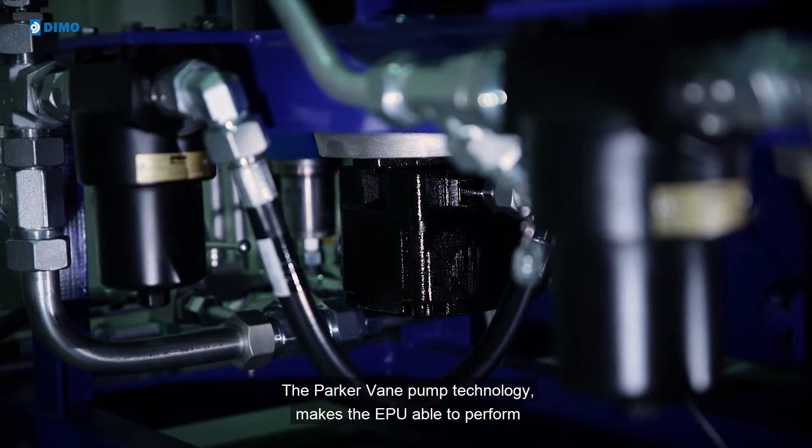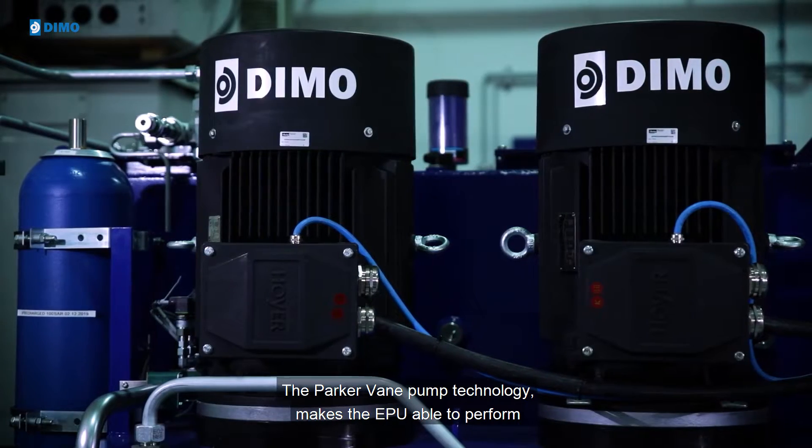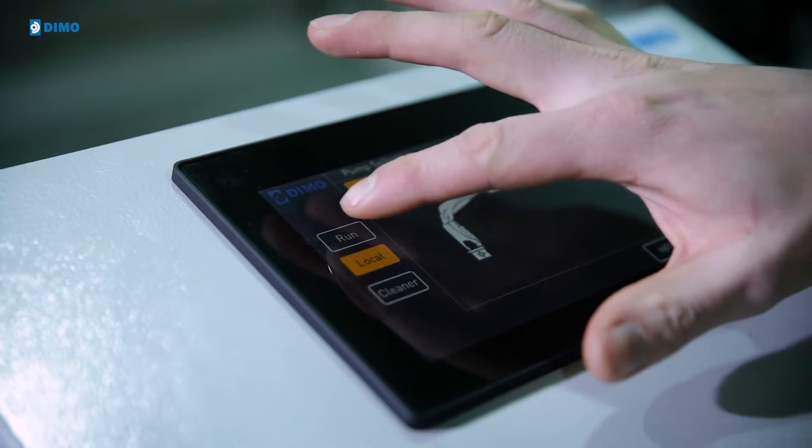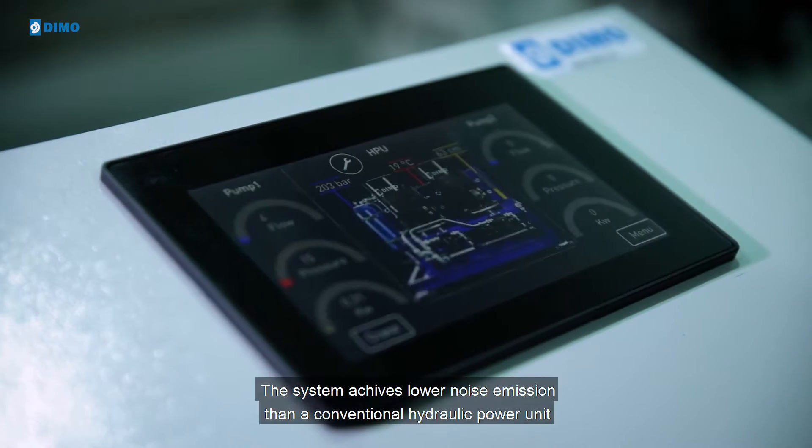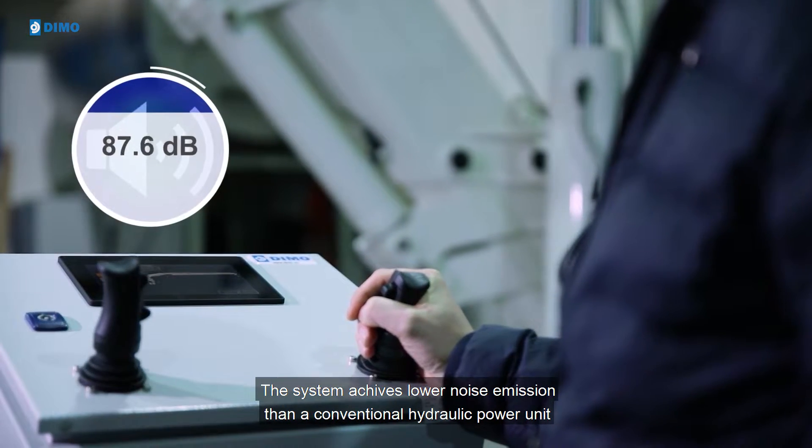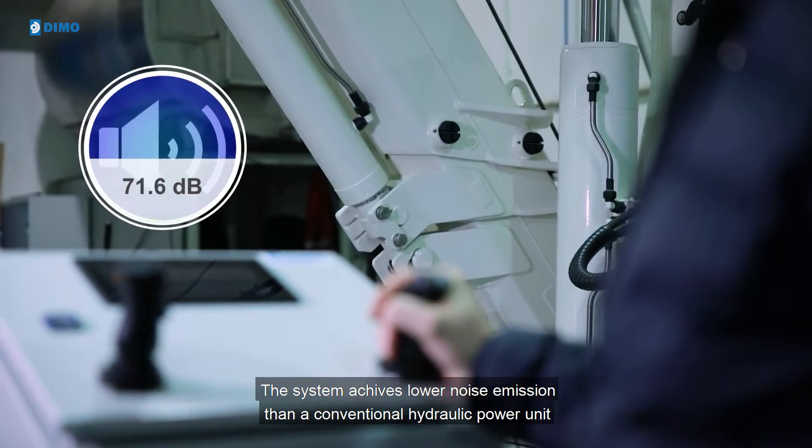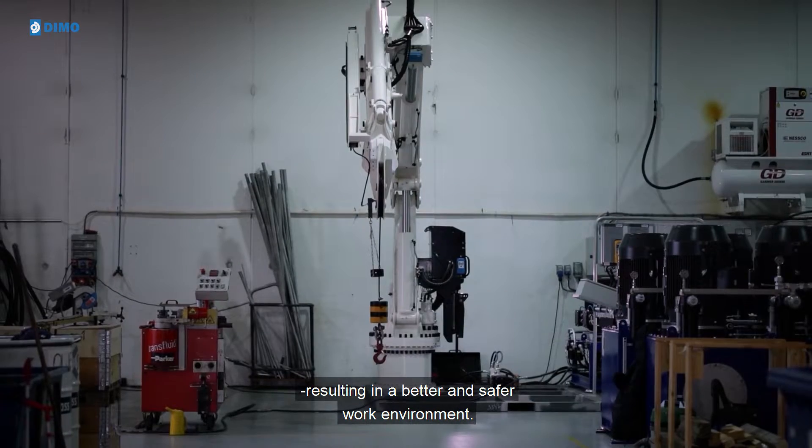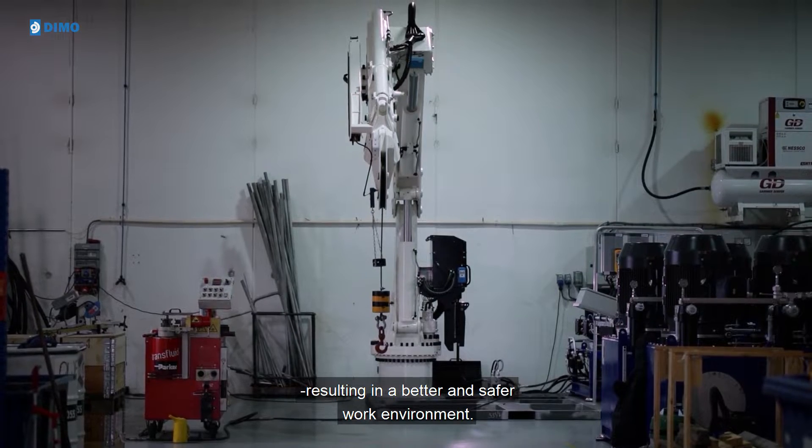The Parker Vane Pump technology makes the EPU able to perform in a wide speed and pressure range. The system achieves lower noise emission than a conventional hydraulic power unit by removing the high-frequency noise of normal piston pumps, resulting in a better and safer work environment.